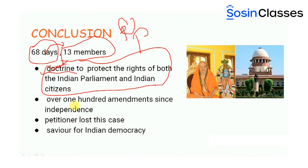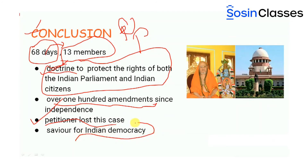Since independence, there have been over 100 amendments to the Indian Constitution. It is because of the bench's decision that the identity and spirit of the constitution have not been lost. This landmark case gave our constitution stability. It is important to note that the petitioner lost the case, yet the Supreme Court ruling turned out to be the savior of Indian democracy and prevented the constitution from losing its spirit. The Keshavananda Bharati judgment proved timely and thwarted many attempts on democracy and the dignity of the individual during those dark years.